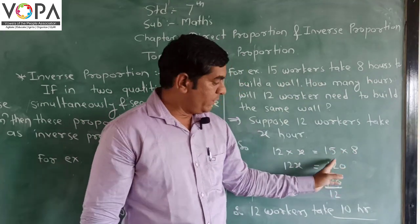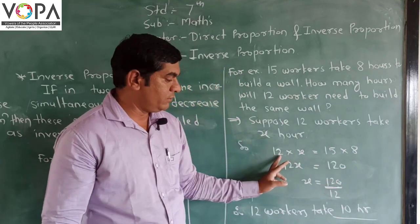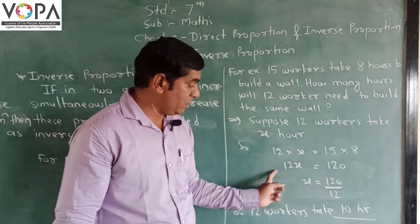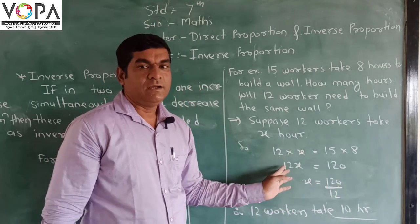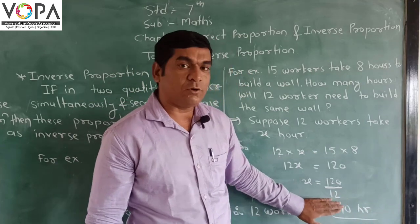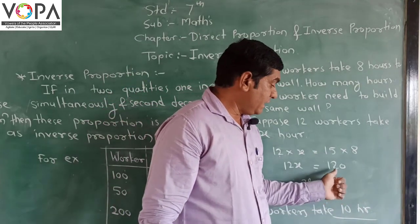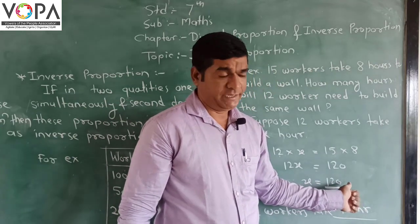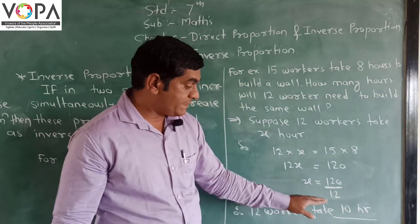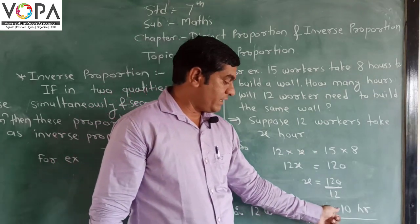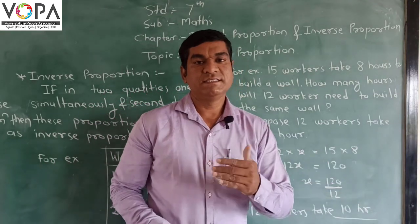15 × 8 = 120. 12 × x = 120. Now 12x is multiplied, so we divide. 120 ÷ 12 = x. So x = 10. Therefore, 12 workers take 10 hours to complete the work.